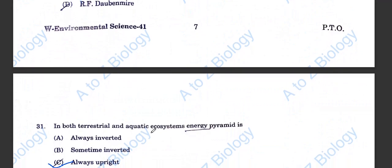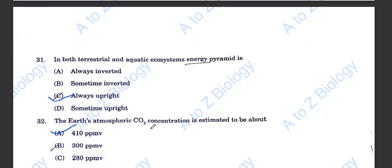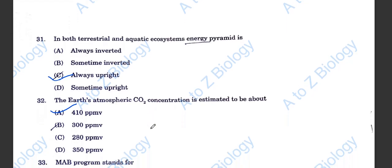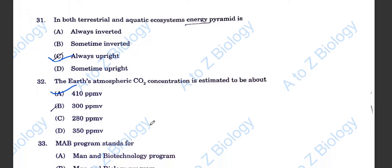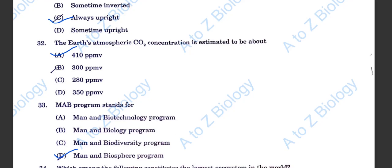In both terrestrial and aquatic ecosystems, energy pyramid is always upright. The earth's atmospheric CO2 concentration is estimated to be about 410, option A. MAB program stands for Man and Biosphere program.